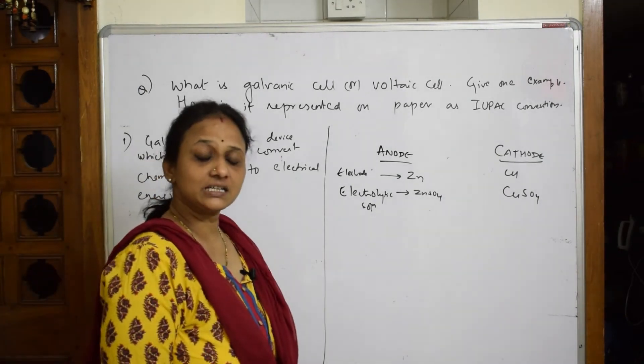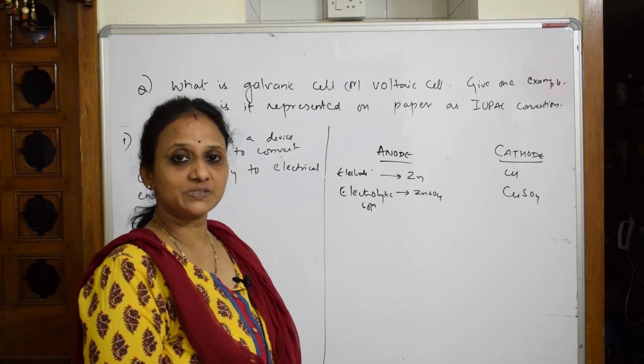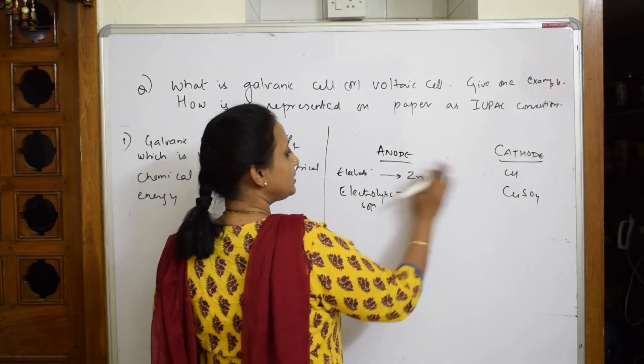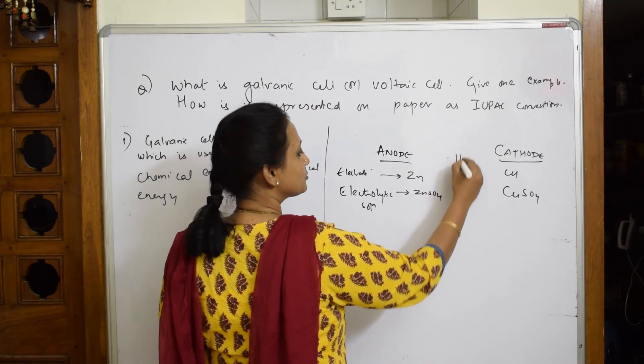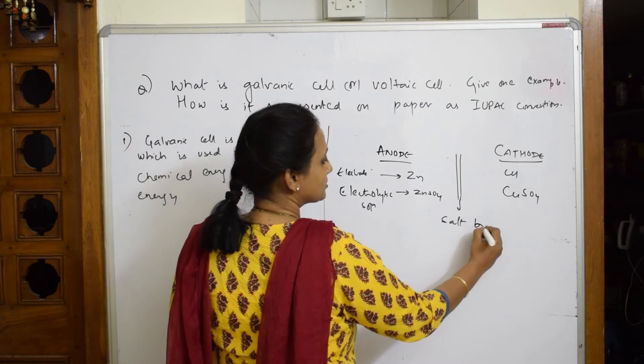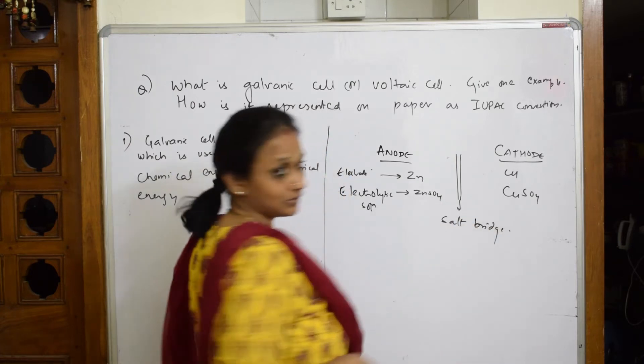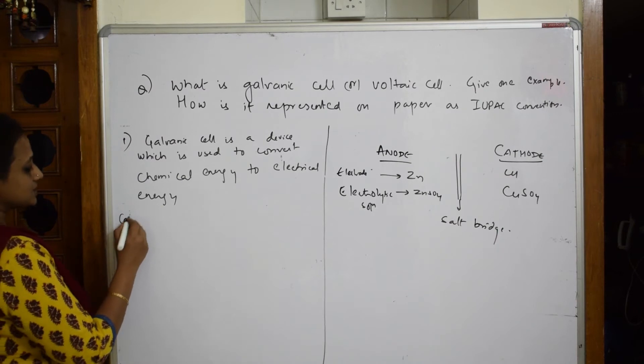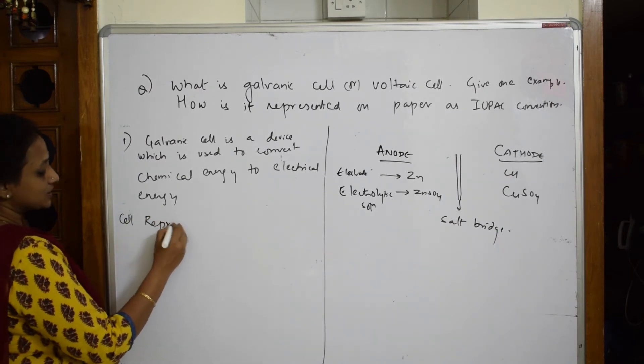Now they're asking me to write the representation. Simple thing: whenever you're writing the electrochemical cell representation, always start from anode and then end with cathode. In between these two you have the representation of the salt bridge, which is represented by double line. Salt bridge which is permeable to ions, certain ions.